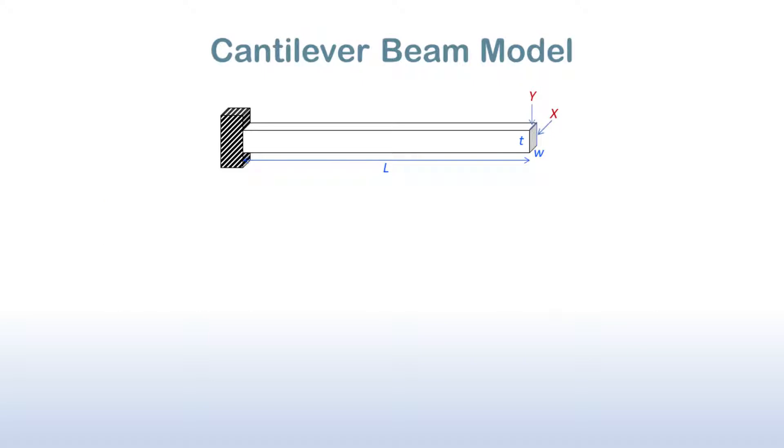For this tutorial, we will use a simple cantilever beam from the Dakota training materials as our simulation model. A cantilever beam is a type of beam anchored at one end to a support, such as a wall. There are seven input variables for our cantilever beam model: the length of the beam L, the width of the beam w, the thickness of the beam t, the density of the beam ρ, Young's modulus E, the horizontal load on the beam X, and the vertical load on the beam Y.